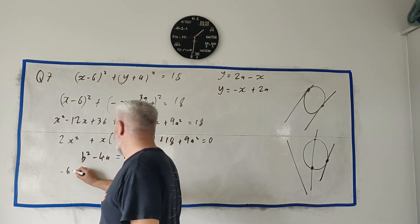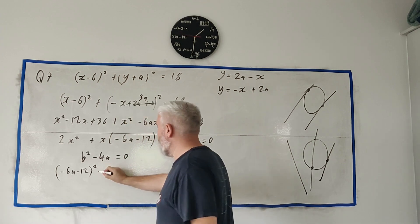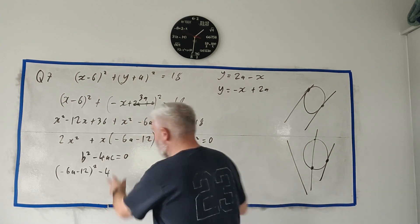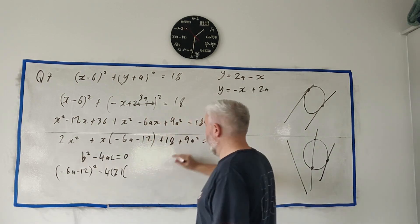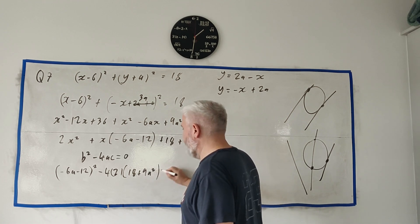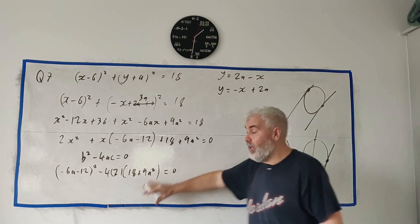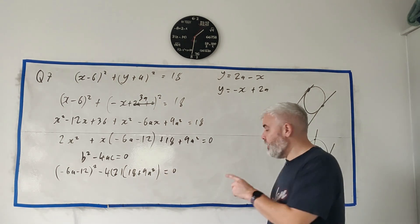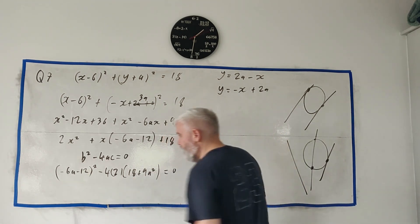Well that gives you two answers only when this guy is bigger than zero. It gives you one answer when this is zero. So that's where that comes from. So this B is here, this is minus 6A minus 12 squared, minus 4AC, minus 4 times A is 2 times C is 18 plus 9A squared. These are messy questions I admit that. You've got a quadratic and then we've got another quadratic.